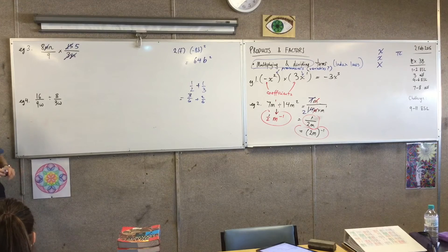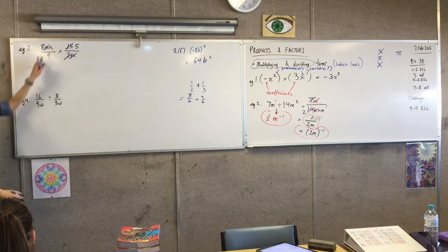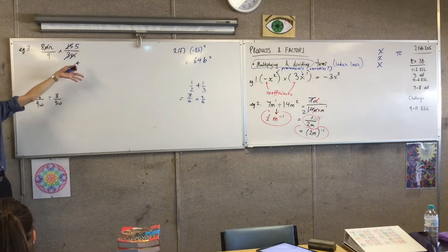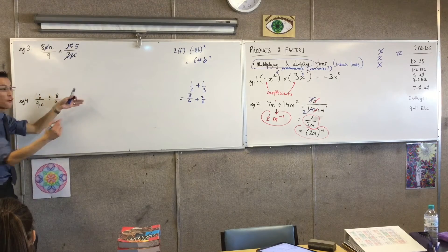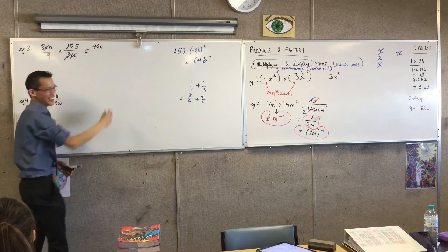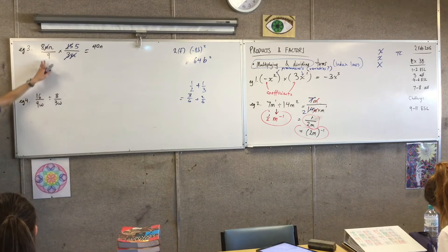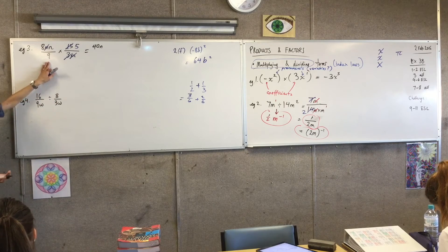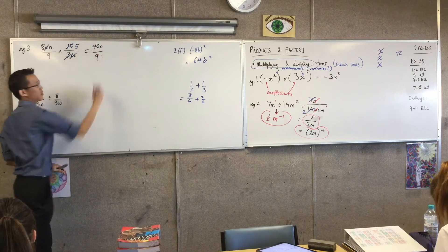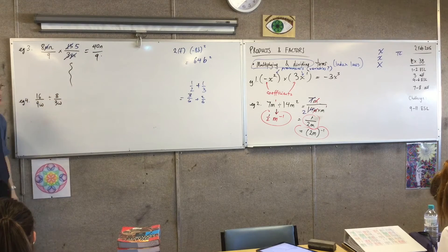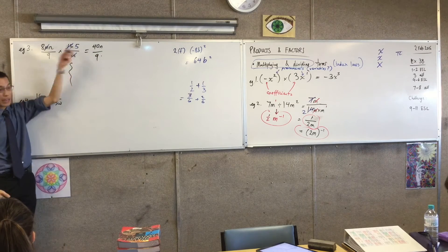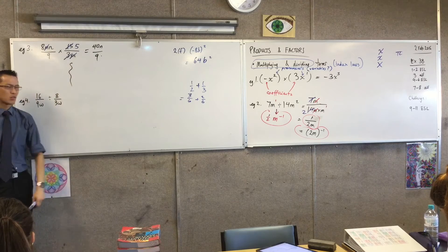What do we get left on the top? 8n times 5, which is 40n. We definitely didn't want to do 8 times 15. And then what's left on the bottom is just a 9. It's not complicated. We didn't need much space at all. Once you cancel the right stuff out, it becomes quite trivial.